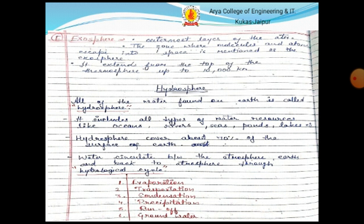Evaporation: water is evaporated into the atmosphere in vapor form. Transportation: when vapor transports from one place to another. Condensation: the vapor changes into liquid. Precipitation: liquid water drops fall on the Earth. Runoff: when water runs off from rocks to seawater. Groundwater: runoff water mixes into the ground.